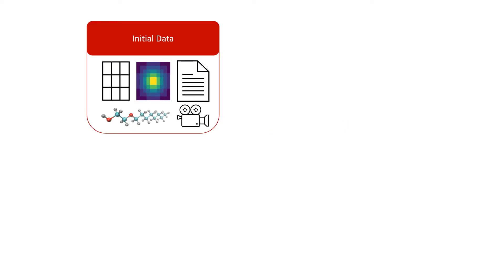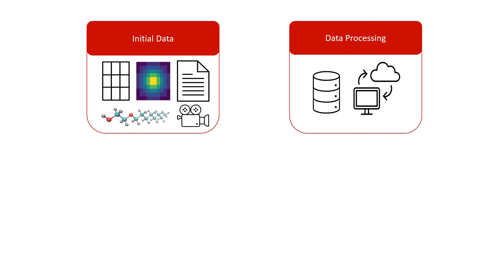We start with the initial data, which can be in various forms, such as spreadsheet entries, images, text documents, molecules, and videos. We also have the data processing components to convert the raw data into meaningful representations.